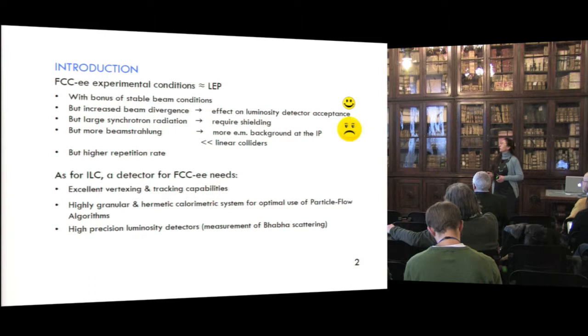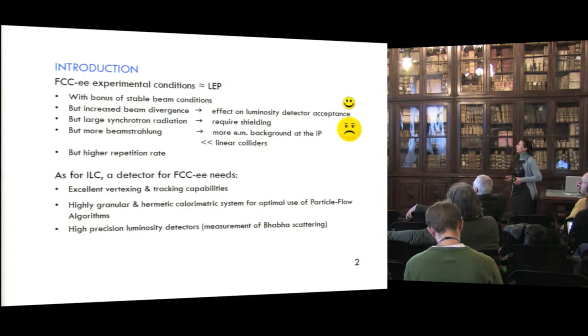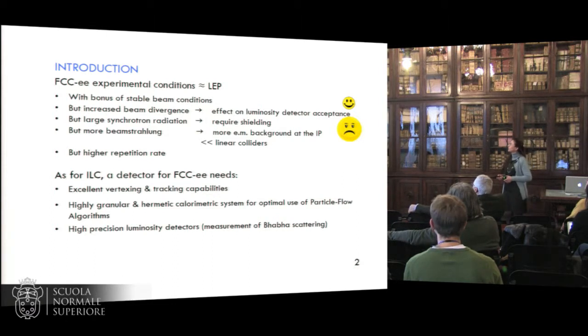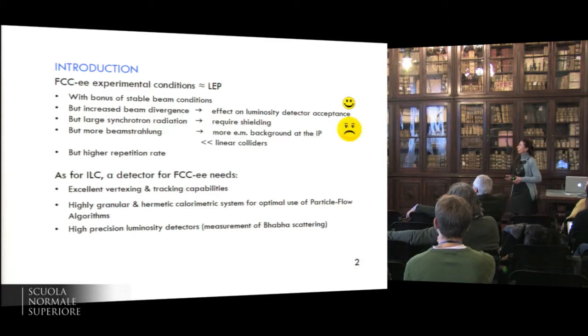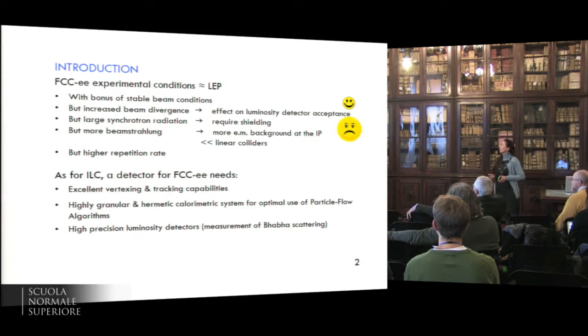So the FCC experimental condition will be very close to that of LEP. It's a clean environment compared to LHC or FCC-HH. We'll have the bonus of stable beam conditions, but increased beam divergence will have some effects on the luminosity detector access. Large synchrotron radiation will require shielding, but perhaps it's not as bad as we thought. There will be more Bremsstrahlung, less than in linear colliders, but it will induce more electromagnetic background at the interaction point. And also, one point that will naturally have consequences on the detector is higher repetition rate.